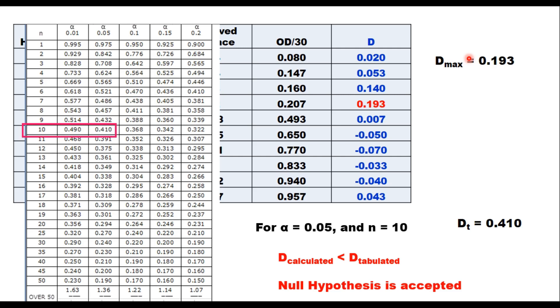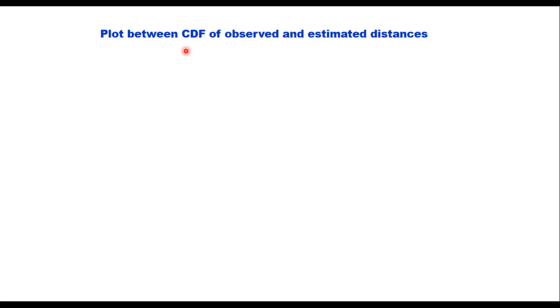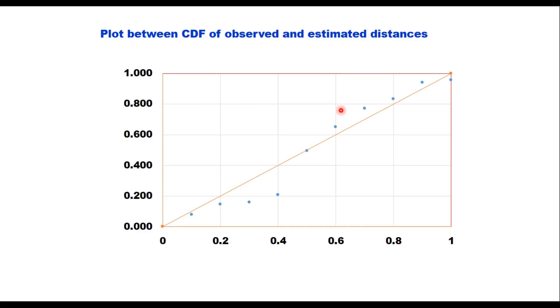This can also be verified by making a cumulative distribution plot — plotting the CDF of observed versus estimated distances. The observed data points and the red diagonal line representing the theoretical distribution are shown. The maximum difference is 0.193, the same as calculated in the table.